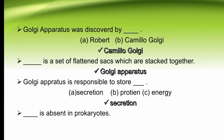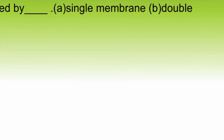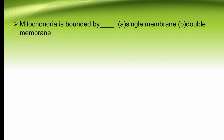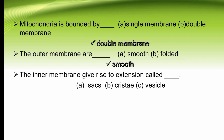Dash is absent in prokaryotes — Golgi apparatus or mitochondria. Mitochondria is present in eukaryotes while it is absent in prokaryotes. The right option is mitochondria. Mitochondria is bounded by dash — single membrane or double membrane. Mitochondria is bounded by a double membrane. The outer membrane is smooth while the inner membrane is folded. The inner membrane gives rise to extensions called dash — cristae or vesicles. The inner membrane gives rise to extensions called cristae. The right option is B.